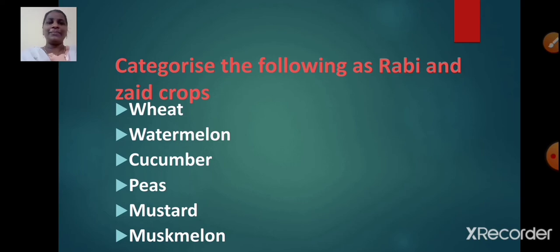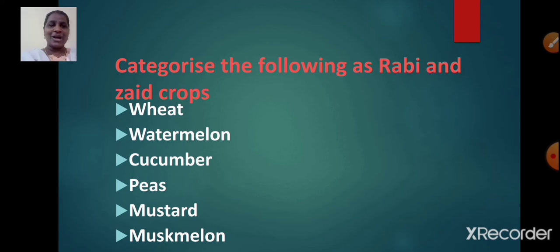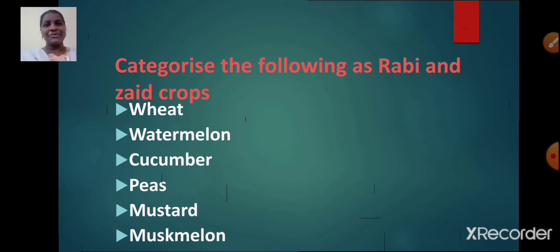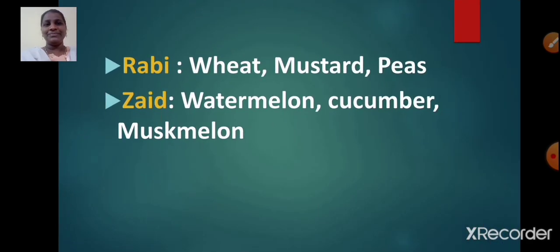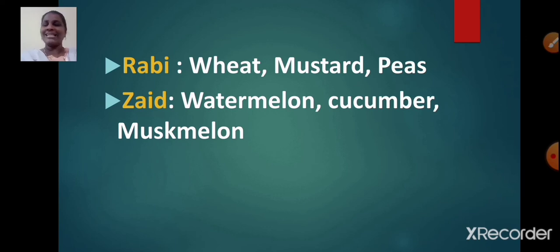Students, you need to categorize the following crops as Rabi and Zaid crops: wheat, watermelon, cucumber, peas, mustard, muskmelon. The answer is: wheat, mustard and peas are Rabi crops; watermelon, cucumber and muskmelon are Zaid crops.